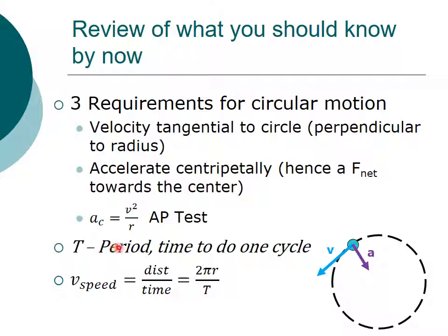Now, we can also know that period is the time to do specifically one circle or one cycle. And so speed can be written as distance over time or 2πr, which is a circumference or the distance traveled, divided by the period or the time to do one cycle.